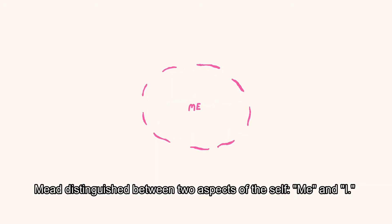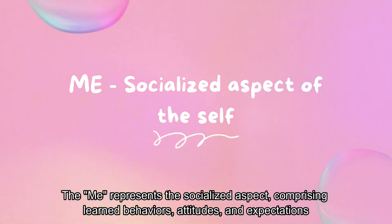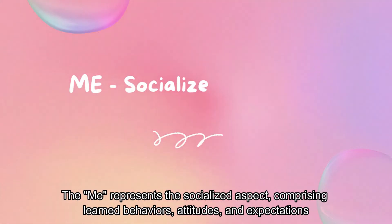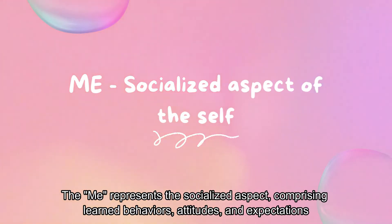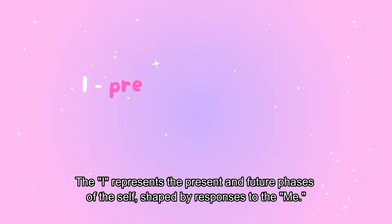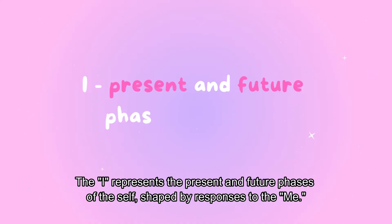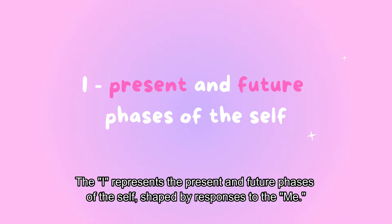The Me represents the socialized aspect, comprising learned behaviors, attitudes, and expectations. The I represents the present and future phases of the self, shaped by responses to the Me.